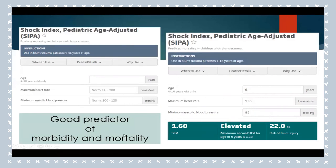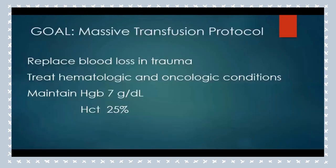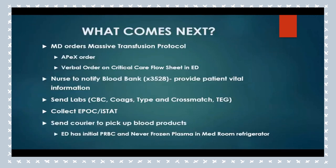The shock index is a predictor of morbidity and mortality. You input the patient's age, their maximum heart rate and minimum systolic blood pressure. For example, a 6-year-old with maximum heart rate 136 and minimum systolic blood pressure 85 has a shock index of 1.6 — normal is 1.2, indicating elevated risk. The goal for MTP is to replace blood loss and treat hematologic conditions, maintaining hemoglobin of 7 g/dL and hematocrit of about 25%. The physician orders MTP, but nurses should encourage early ordering so the blood bank can begin preparations.